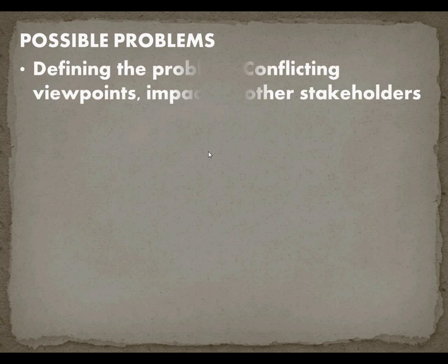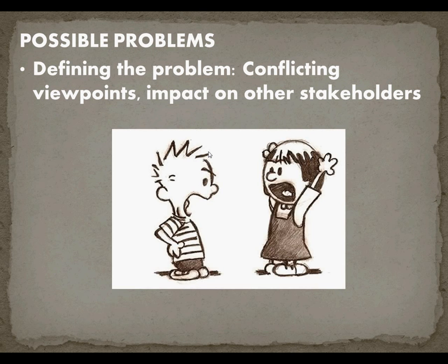What are some of the possible problems with developing a decision model or challenges that can occur? It can start right at the beginning when we're defining the problem. There are going to be conflicting viewpoints within your organization or other stakeholders that will be impacted, and everyone's going to want to argue about how the problem should be defined and what exactly should we be looking at.